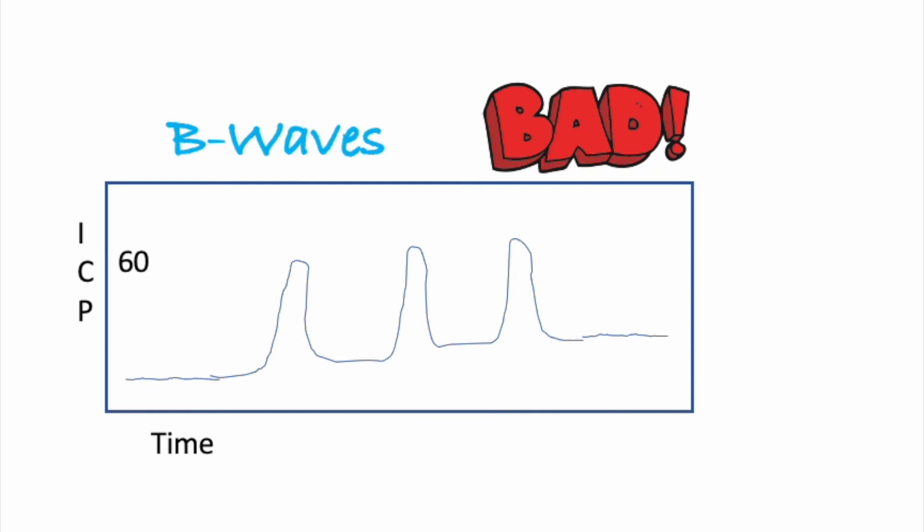They're not as bad as A-waves, because if you remember with A-waves, those shark fins, it's a prolonged period of ICP. We have a very high ICP over a very long period of time. Whereas B-waves, we still have these huge spikes in our ICPs, but our time is much less. We get an increased spike, but it comes down quickly.